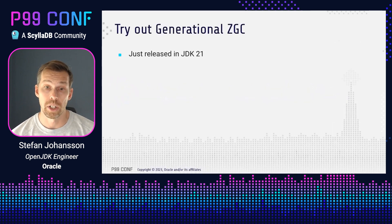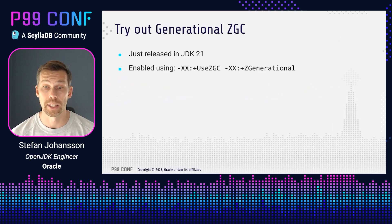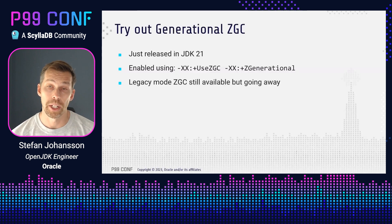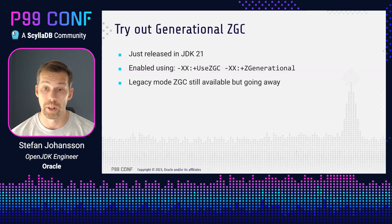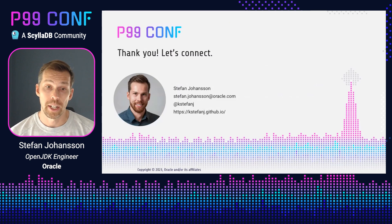Maybe the most important conclusion: you should really try out generational ZGC. To do so, just download the latest JDK — JDK 21, released last month — and enable it by using -XX:+UseZGC and -XX:+ZGenerational. It's as simple as that. Legacy mode is still available in JDK 21 but it is going away in a future release, so you should be switching over to generational ZGC. That's it for me today — thanks for listening, and if you have any questions feel free to reach out.